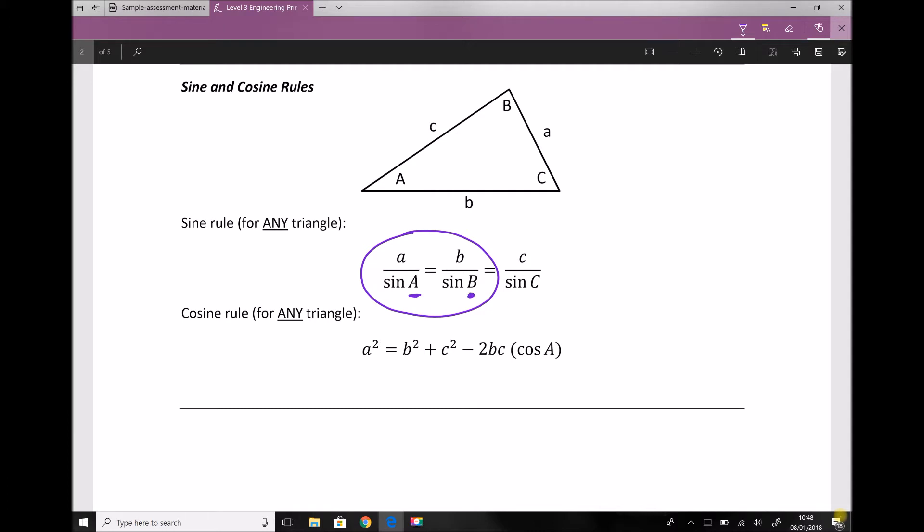In the case of our question, we're not given any angles, which means we're going to have to resort to using the cosine rule, where there's only one angle as an unknown and all of the other terms are lengths of sides.